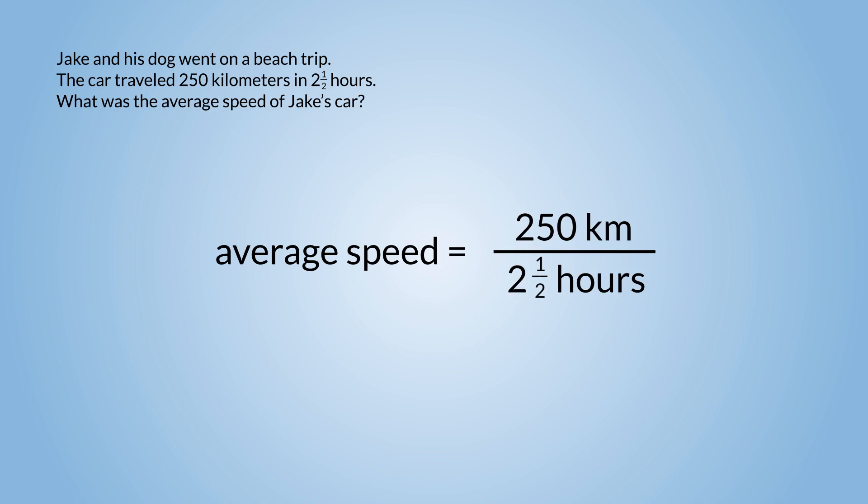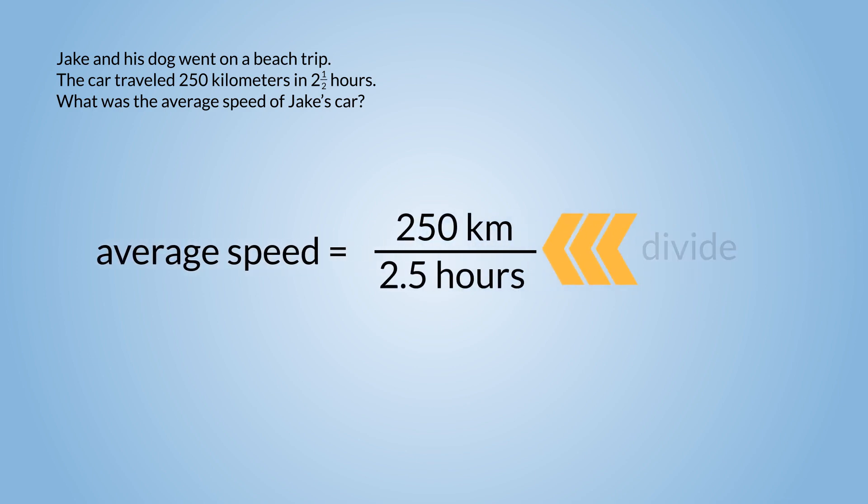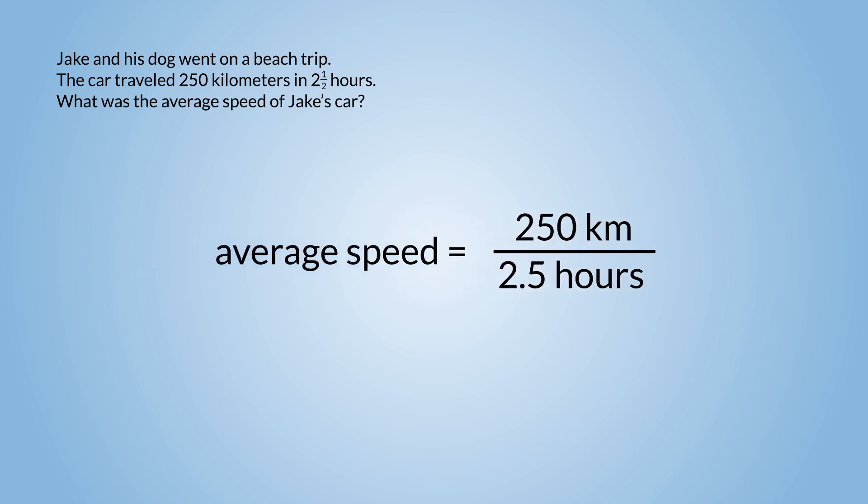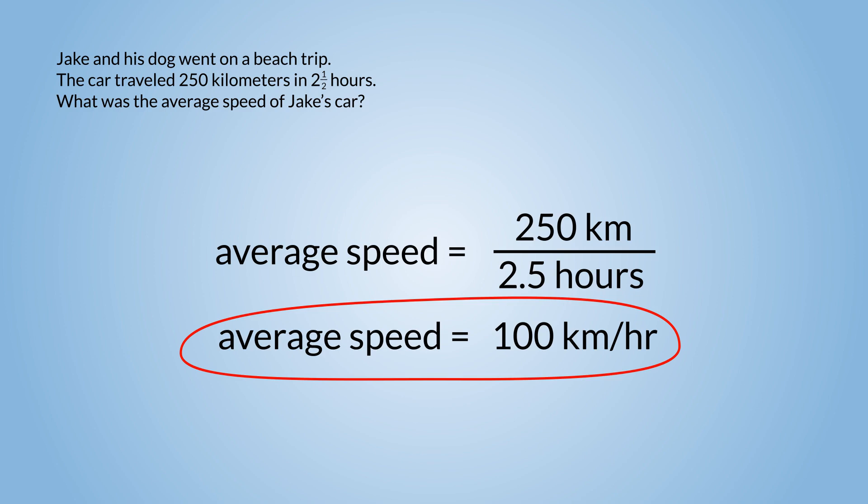Two and a half hours can also be written as 2.5 hours. Now let's divide 250 kilometers by 2.5 hours. We can now say that the average speed of Jake's car is 100 kilometers per hour.